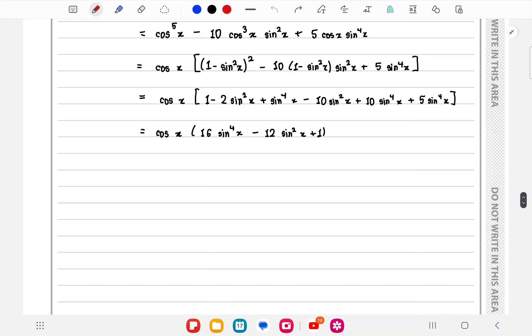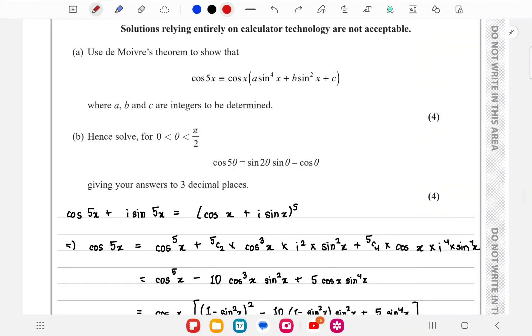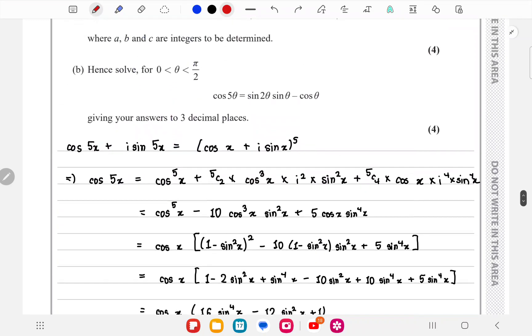In part b, we have to find the solution for this equation. The values of theta are given in the range 0 to π/2, and we have to give our answers to three decimal places.